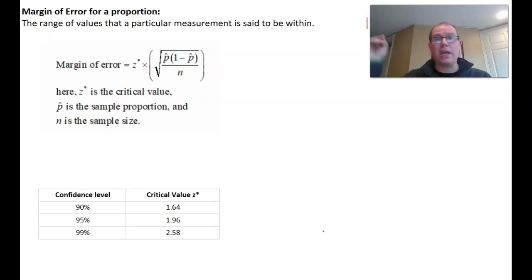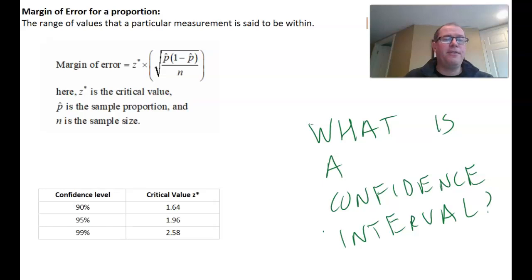In my previous video, which was called what is a confidence interval, we went through that for a 90% confidence interval we need a Z score critical value of 1.64, and for a 95% one, 1.96, and for a 99% one, 2.58. If you need to watch that video again, please do so. I'd recommend it.